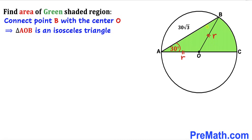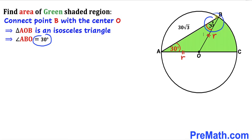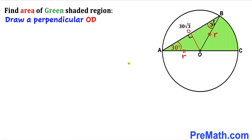Since triangle AOB is isosceles, the base angles are equal. So angle ABO turns out to be 30 degrees as well.